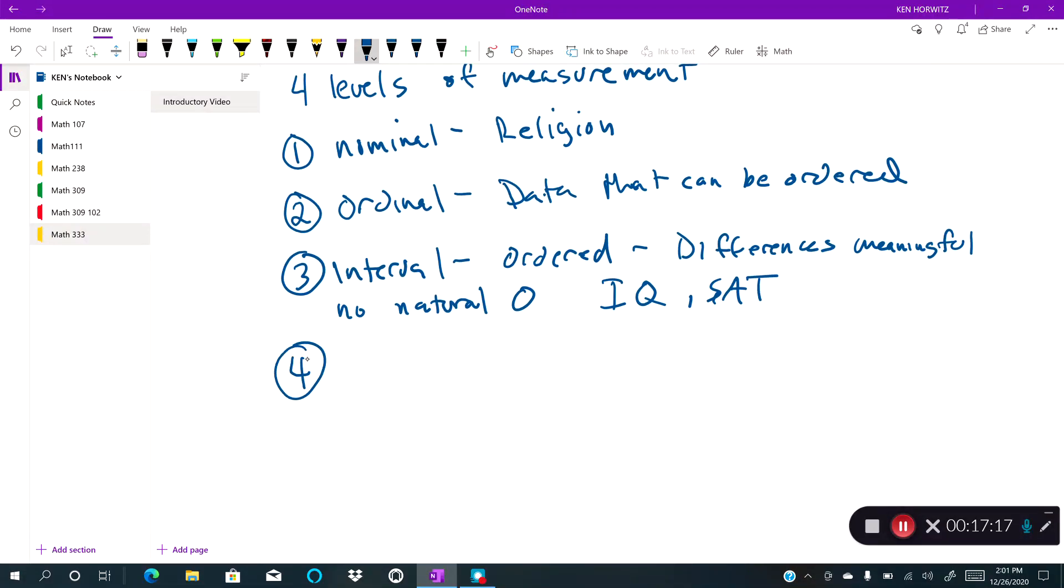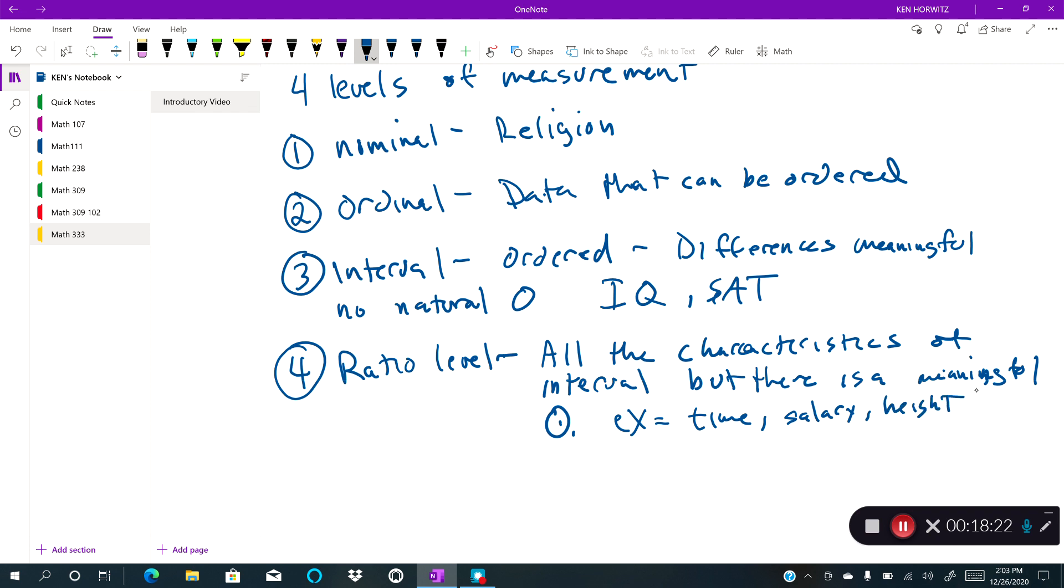And so lastly, the fourth thing is ratio. It has all the characteristics of interval, but there is a meaningful zero. And some examples of that would be time, salary. So there are your levels of measurement.